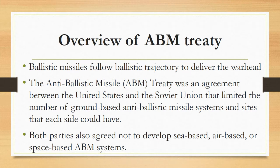The anti-ballistic missile treaty, or ABM treaty, was an agreement between the United States and the Soviet Union that limited the number of ground-based anti-ballistic missile systems and sites that each side could have. Both parties also agreed not to develop sea-based, air-based, or space-based ABM systems. After the fall of the Soviet Union, the treaty was expanded to include Belarus, Ukraine, and Kazakhstan.